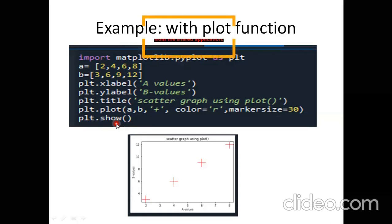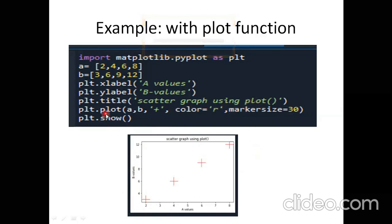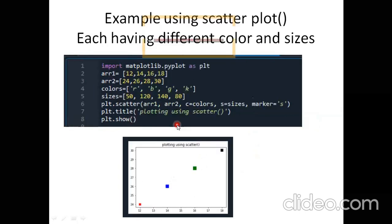If you do not write plt.show(), your graph will not be visible. The show function displays the graph with all values plotted. This is how you create a scatter graph using the plot function. Now we will look at how to use the scatter function, which we will mostly be using going forward.